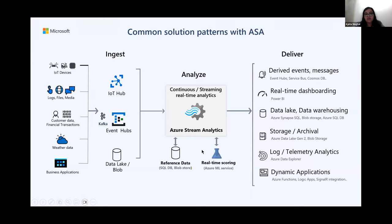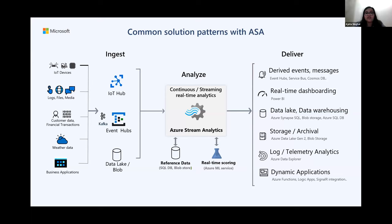Once Azure Stream Analytics analyzes your data, it can send it to 11-plus destinations. There are multiple scenarios: you can filter or aggregate on real-time events, build dashboards in Power BI, send to warehousing with Synapse, Blob, or SQL DB, do log telemetry analytics, or build dynamic applications. The essence is that data flows from your real-time source into Azure, gets processed through Azure Stream Analytics, and is sent to many destinations easily.